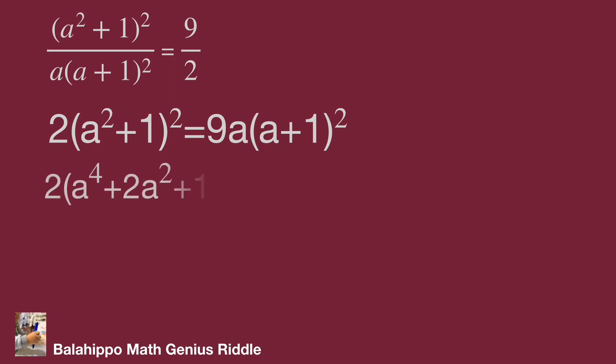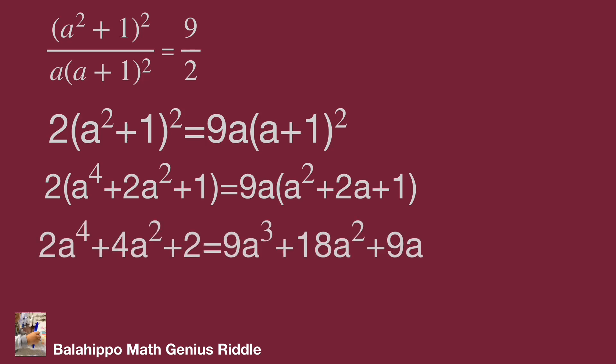Therefore, simplify the equation as 2a⁴ + 4a² + 2 equal to 9a³ + 18a² + 9a. Wow, power of 4, power of 3, so complicated. This would not be the right direction.